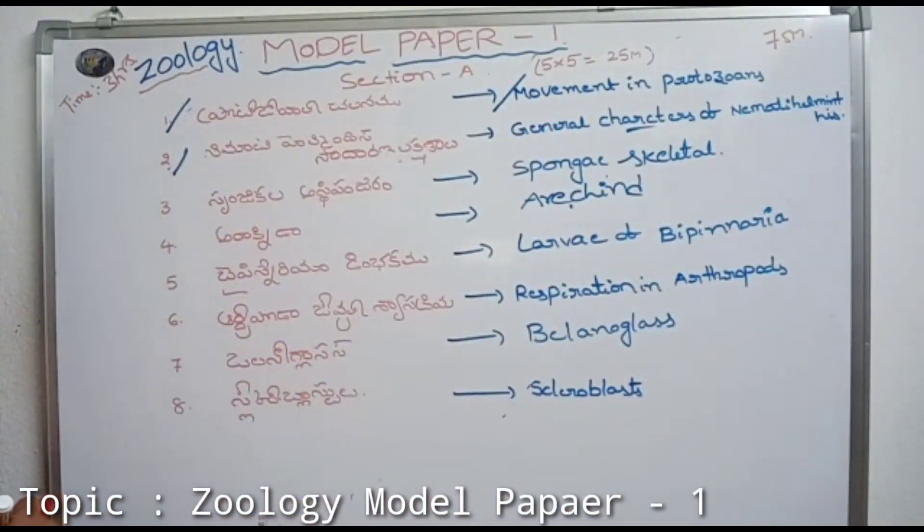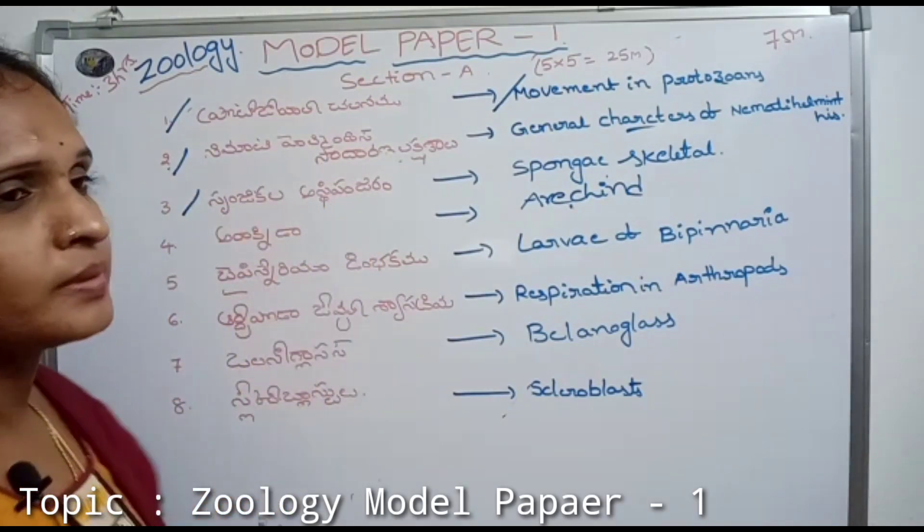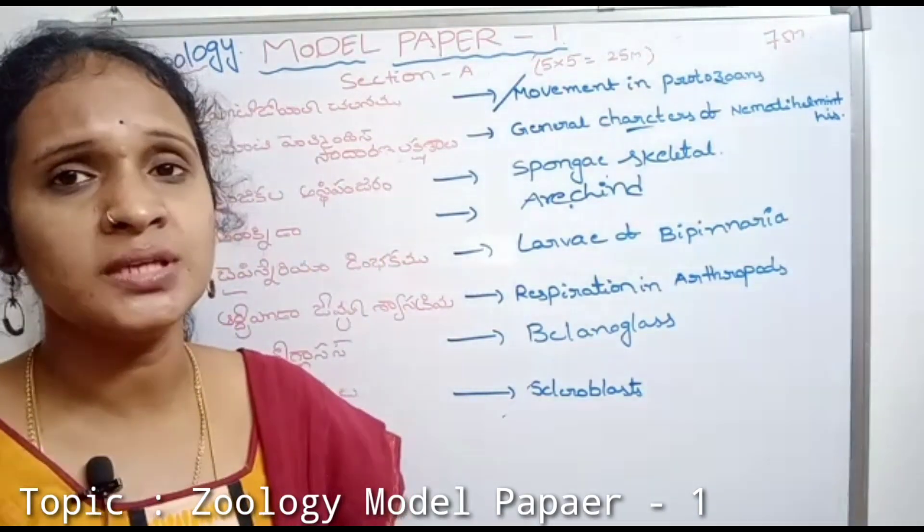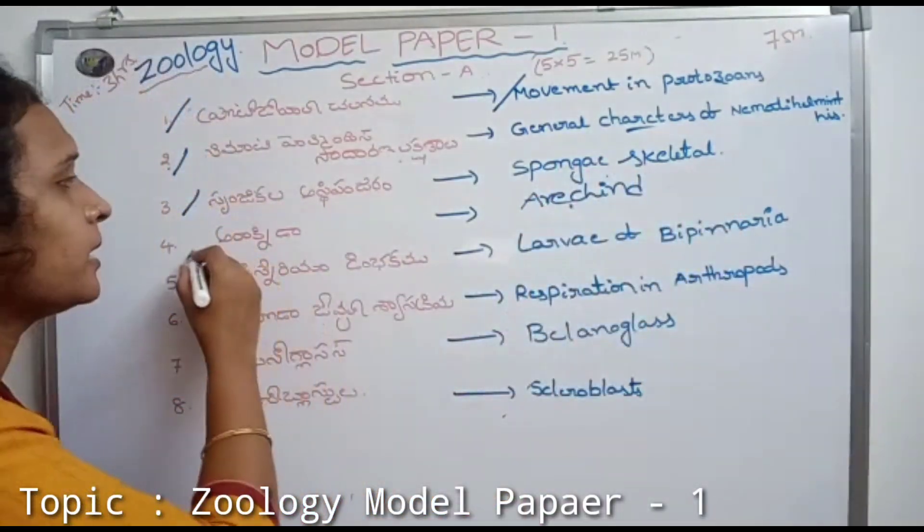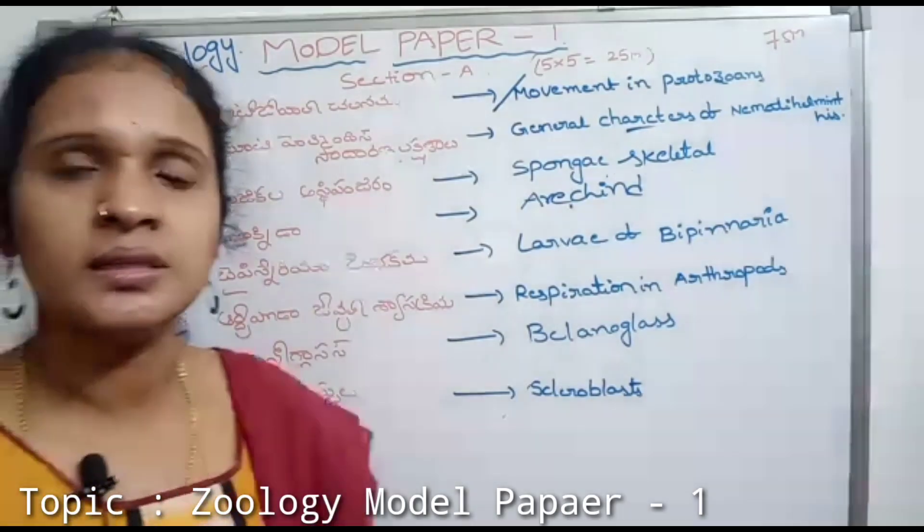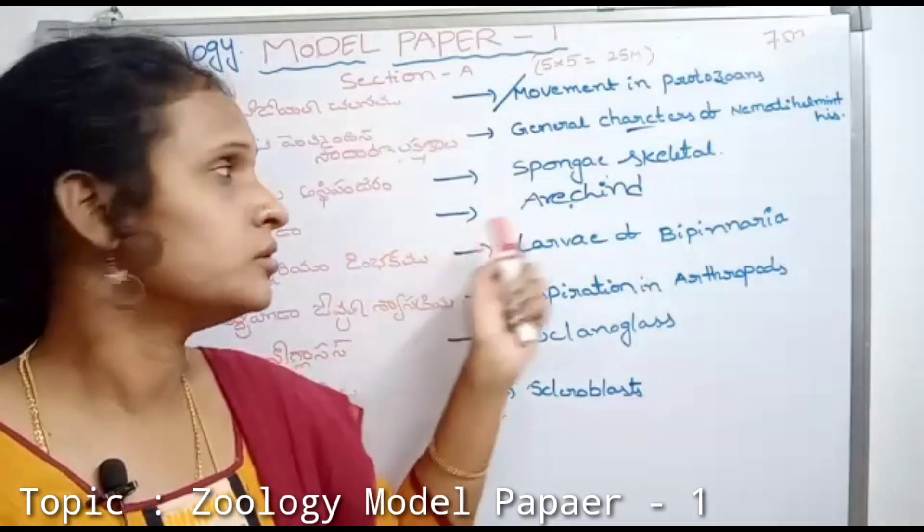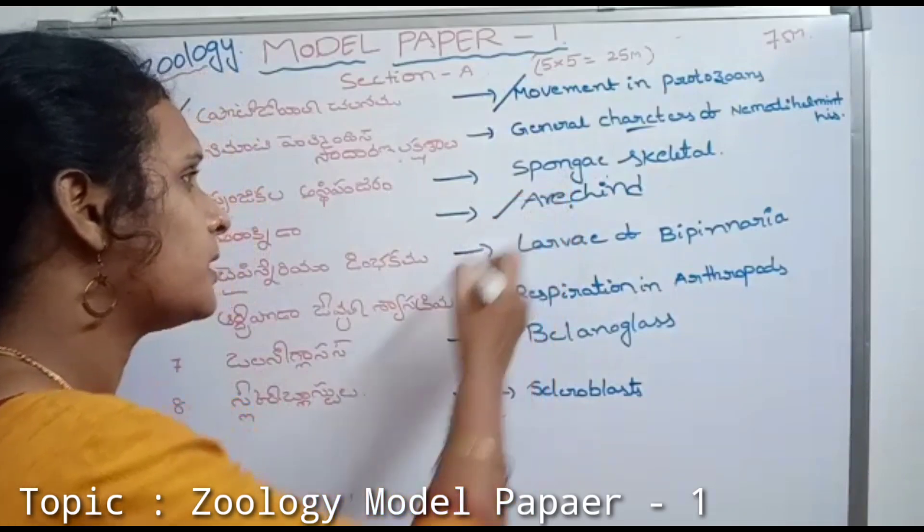Next, spongy skeleton - explain the spongy skeletal system. Next is Arachnida. Explain Arachnida in English.